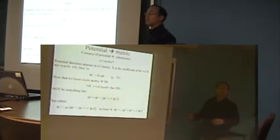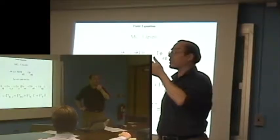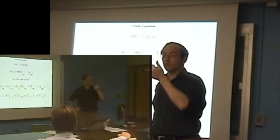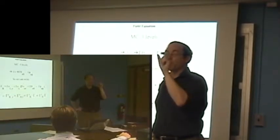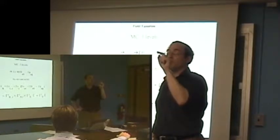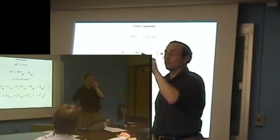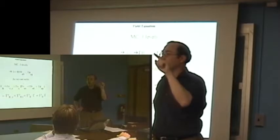Think of dt squared as dt times dt, so it's a double t. I'm going to call that function in front of dt squared g_tt. g meaning it's part of the metric, tt meaning it's in front of dt times dt. You all see that?